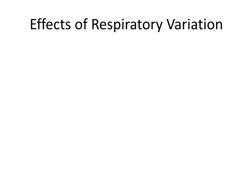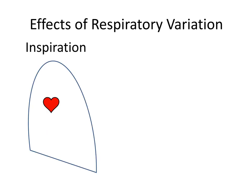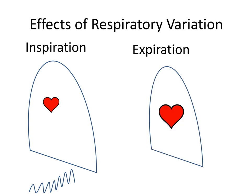Let's briefly discuss how positive pressure and mechanical ventilation impact our waveforms. The effect of positive pressure ventilation on the right heart catheterization pressure waveforms is the exact opposite compared to a spontaneously breathing individual. The alveolar and intrathoracic pressures increase during the inspiratory phase as positive pressure is used to inflate the lungs, impairing venous filling and causing an increase in the pressure waveform. In the expiratory phase, the alveolar and intrathoracic pressures decrease as the positive pressure is released, improving venous filling and causing a decrease in the pressure waveform.